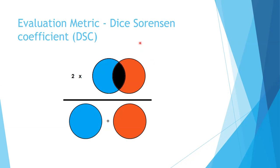Quickly recapping the evaluation metrics used: the first is the Dice-Sørensen coefficient, or simply the Dice coefficient. It is a similarity measure commonly used in image segmentation that compares the similarity between two sets of data — in our case, the ground truth and the model output. It is defined as twice the size of the intersection of two sets divided by the sum of their sizes. It ranges from zero to one, where zero indicates no overlap and one indicates a perfect complete overlap, sometimes represented as a percentage of 100.